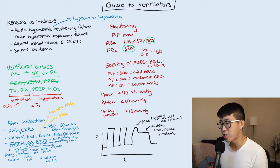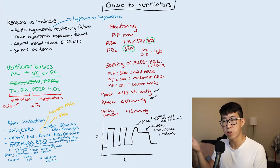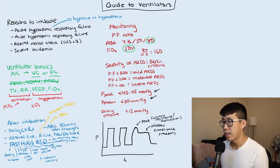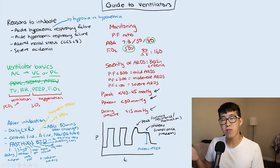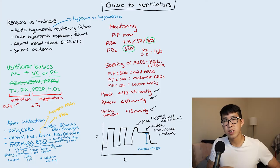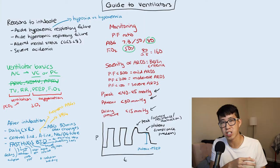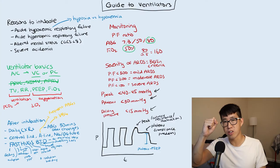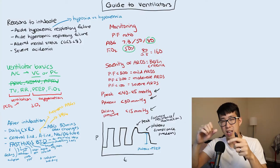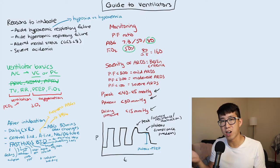If pressures exceed those values, you're increasing the risk of barotrauma — you may pop a pneumothorax — so ventilator adjustments are needed. The driving pressure is the plateau pressure minus PEEP, and we want it below 15. The driving pressure represents how much alveoli are collapsing and distending during gas exchange; above 15, alveoli are opening and shutting excessively, increasing barotrauma risk.